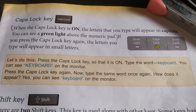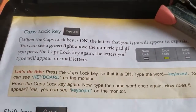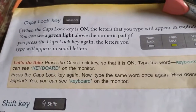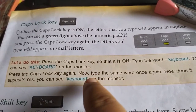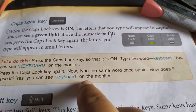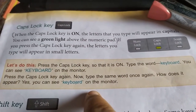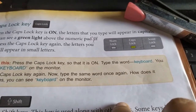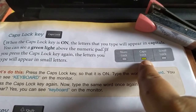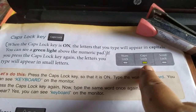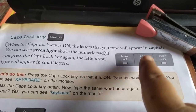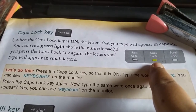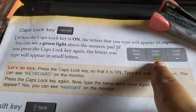Now, the caps lock key. This is the caps lock key — see it on the keyboard here. When the caps lock key is on, the letters that we type will appear in capital. We can see a green light above the numeric keypad — that means the caps lock key is on. If this light is off, that means the caps lock key is not on, and the typing will all be in small letters.